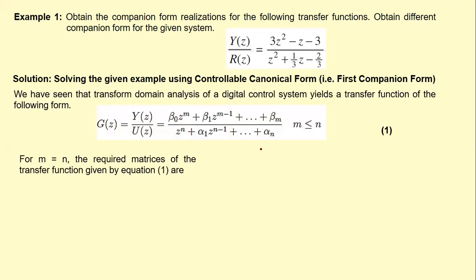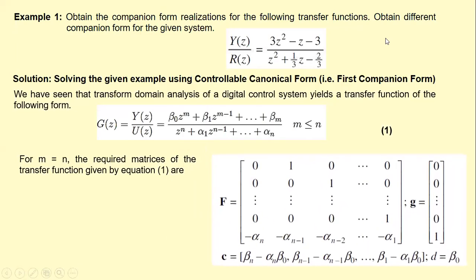Now if m is equal to n, the required matrices of this transfer function are given by a standard form. As seen in our previous lecture, the required matrices of the state space model of the given transfer function — equation one — are the F matrix, G matrix, C matrix, and D matrix. Our purpose is to obtain these matrices for the given transfer function.